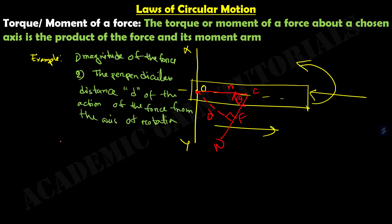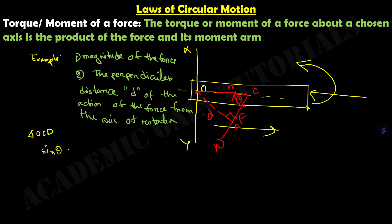From triangle OCD, sin theta = D/R, so D equals R sin theta. Since torque is the product of the magnitude of the force and the perpendicular distance d from the axis of rotation, we can write torque as F into R sin theta.